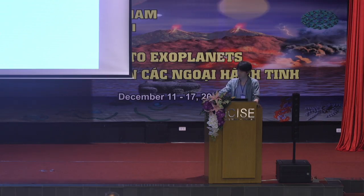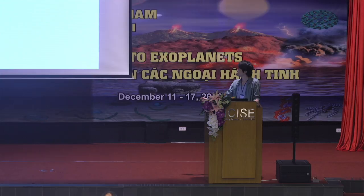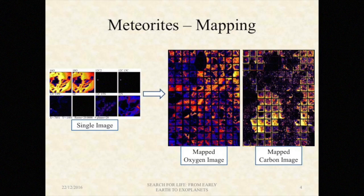If you remember from the previous talk, nanoSIMS-50L is capable of producing up to seven elements, so it can simultaneously analyze seven elements plus one image for secondary electrons. What we did for this analysis was instead of mapping a whole large section of the meteorite sample, we tried to statistically investigate the collection of these single images. Each of these frames represents one of these single images.